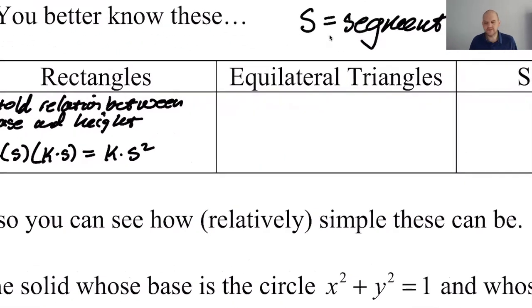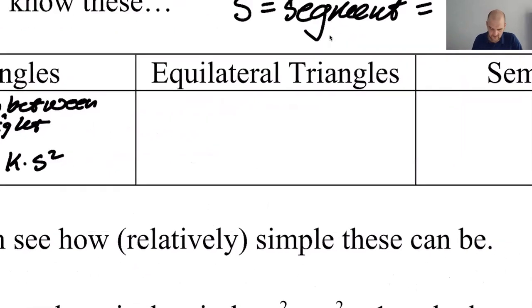But you have to be told, like maybe the height is one-fifth the base. Maybe the height is five times the base, like whatever. You have to know what K is, but it'll be given. So you don't have to worry about that.